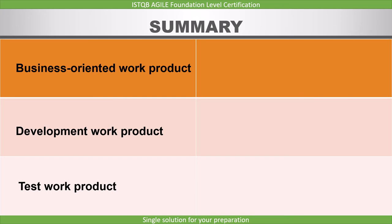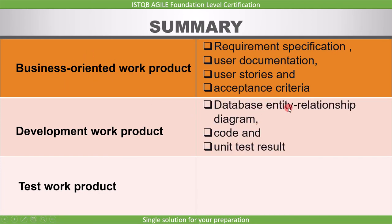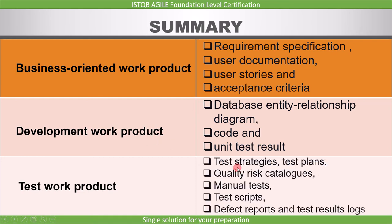In summary, we covered three work products relevant to the tester: business-oriented work product, development work product, and test work product. Requirement specification, user documentation, user stories, and acceptance criteria are the work products of the business task. Database entity relationship diagram, code, and unit test results are the work products of the development task. Test strategies, test plans, quality risk catalogs, manual tests, test scripts, defect reports, and test results logs are the work products of the testing task.